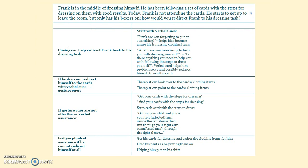Scenario four: Frank has been successfully using dressing cue cards, but today he is not attending to the cards and starts to leave the room with only his boxers on. To redirect him, start with verbal cues: 'Frank, are you beginning to put something on?' to help him become aware of missing clothing items. Then redirect him to the cards by pointing to them. Progress to gestures if needed, then verbal assistance such as 'Get your cards with the steps for dressing.' Finally, move to physical assistance — getting the cards and gathering clothing — if he still cannot redirect himself.